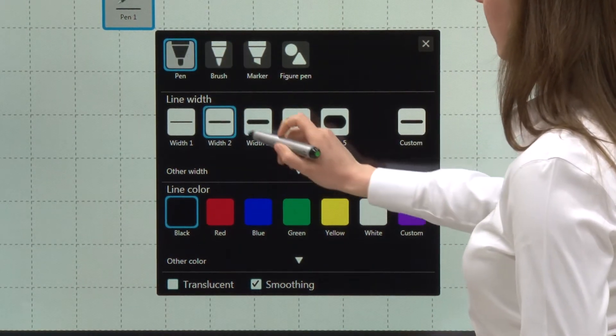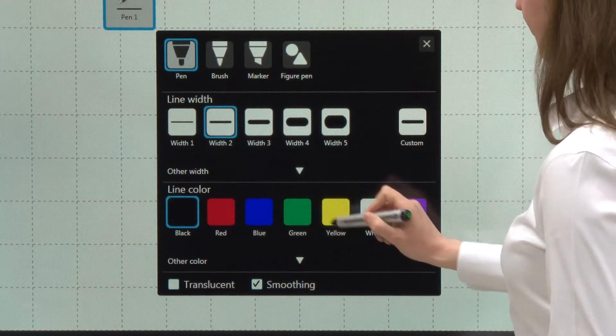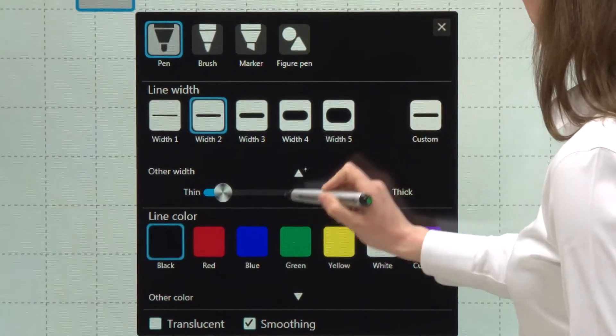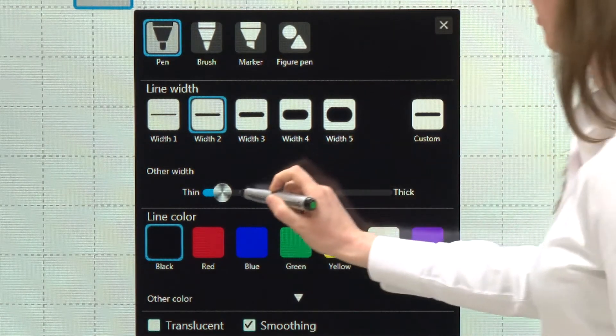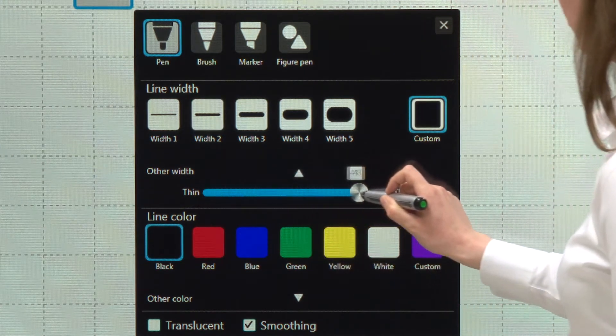So let's just choose Pen, line width, we'll leave it at 2. But down here you can also change your width, you can customize it. You can make it very thin or very thick.